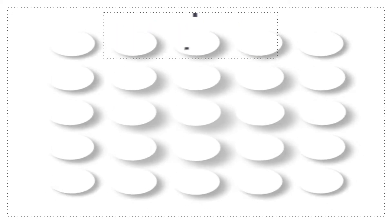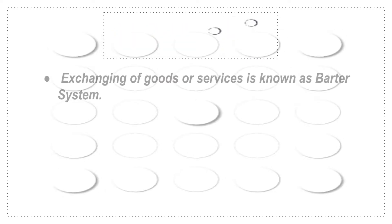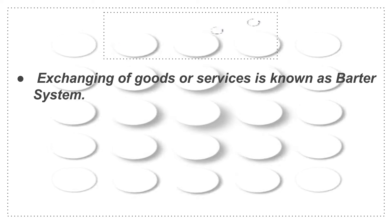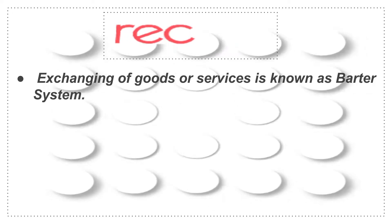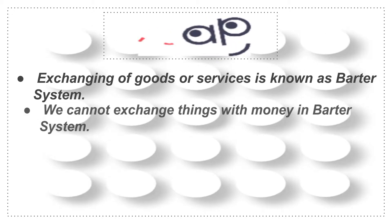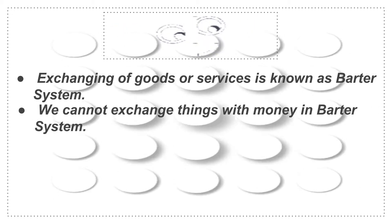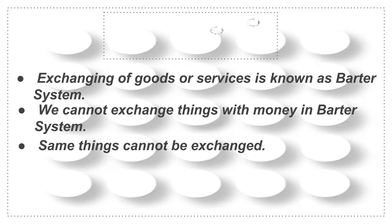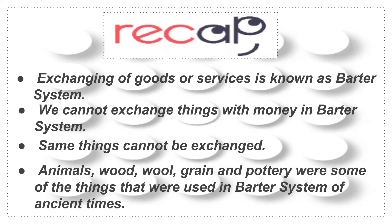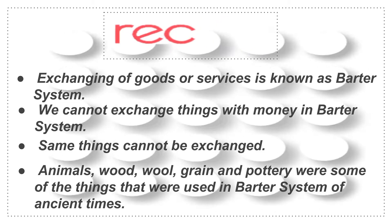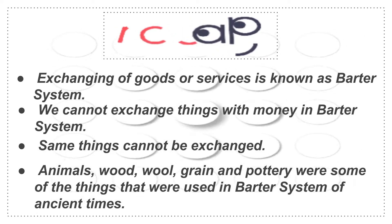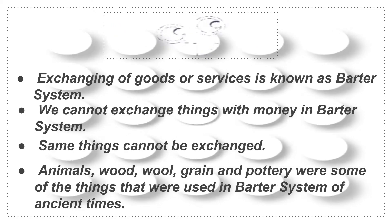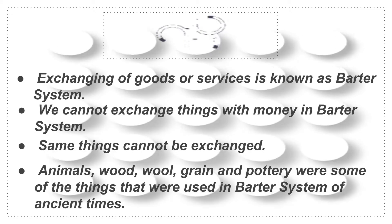Now it's time to recap what we learned in our previous learning plan — the barter system. We studied that exchanging goods or services is known as the barter system. We cannot exchange things with money in the barter system. Same things cannot be exchanged. Animals, wood, wool, grain and pottery were some of the things used in the barter system in ancient times.